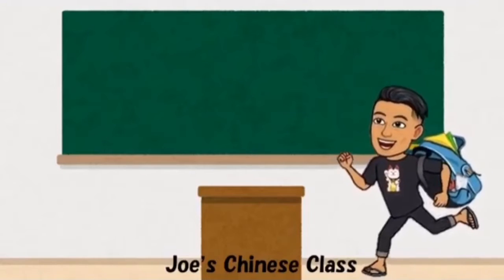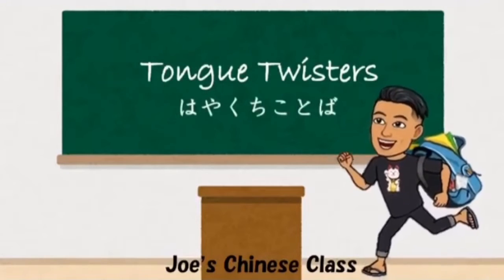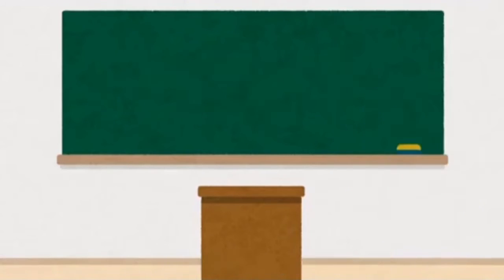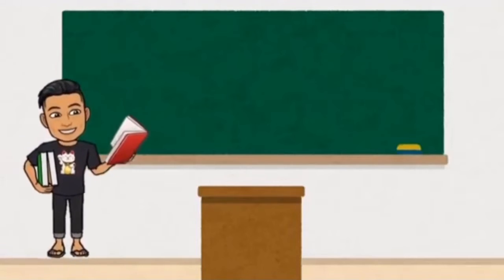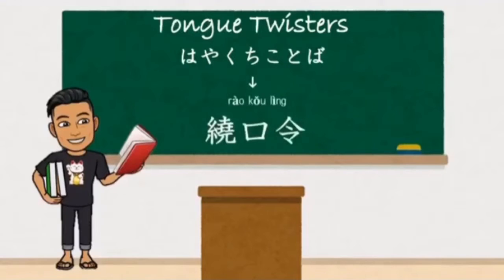大家好，我是Joe. Welcome to Joe's Chinese class. Let's play Tongue Twisters in Chinese. 讓我們一起來玩繞口令. Tongue Twisters is 繞口令 in Chinese. Let's go. 開始囉.